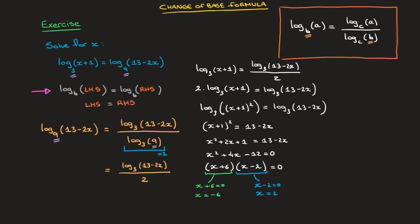Now that we've found these two values of x, it may feel like we're done — but careful, there's one last thing to do. We need to check whether both solutions are actually valid for our logarithms. Remember, logarithms are only defined if what's inside them is positive. If we substitute x equals negative 6, we get log base 3 of negative 5 on the left-hand side, which is not defined, so x equals negative 6 is not a solution. On the other hand, substituting x equals 2 gives 2 plus 1 on the left-hand side, which is positive, and 13 minus 4 equals 9 on the right-hand side, which is also positive. So x equals 2 is the solution.